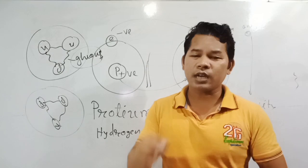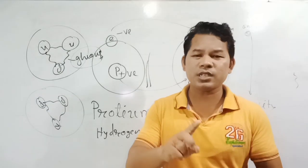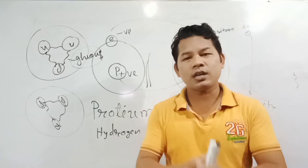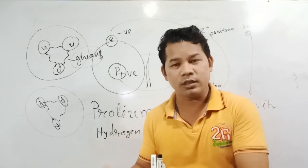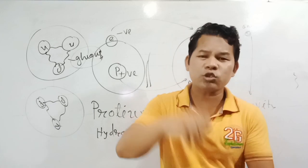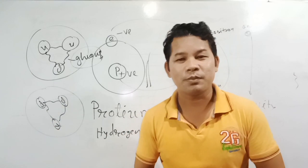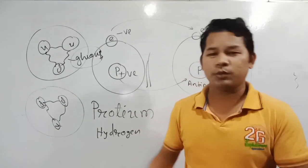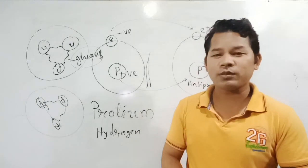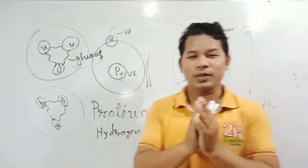The matter of the universe is only 5%. Dark matter and dark energy make up the remaining portion — ordinary matter is only 5% of the universe. If you have any questions about scientific motivation, let's explore it further.